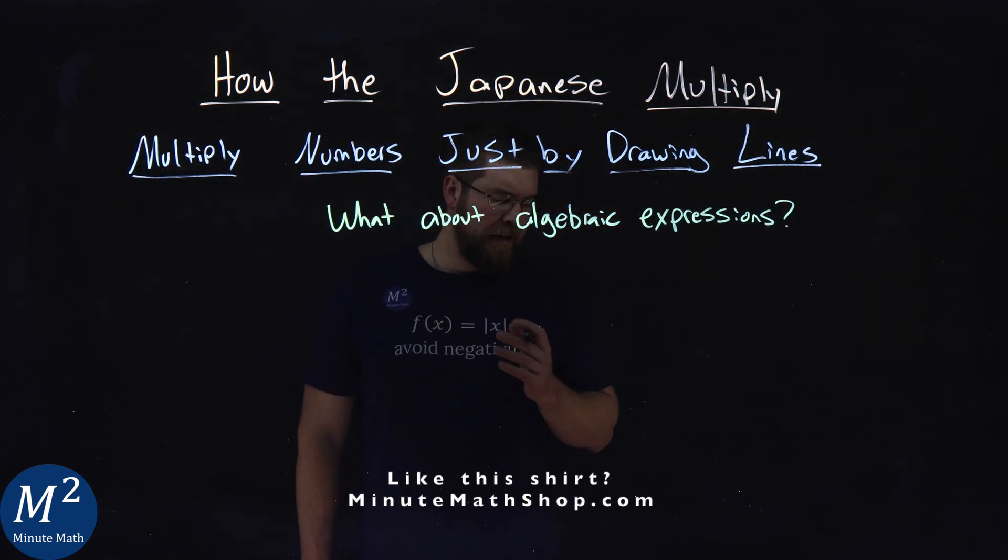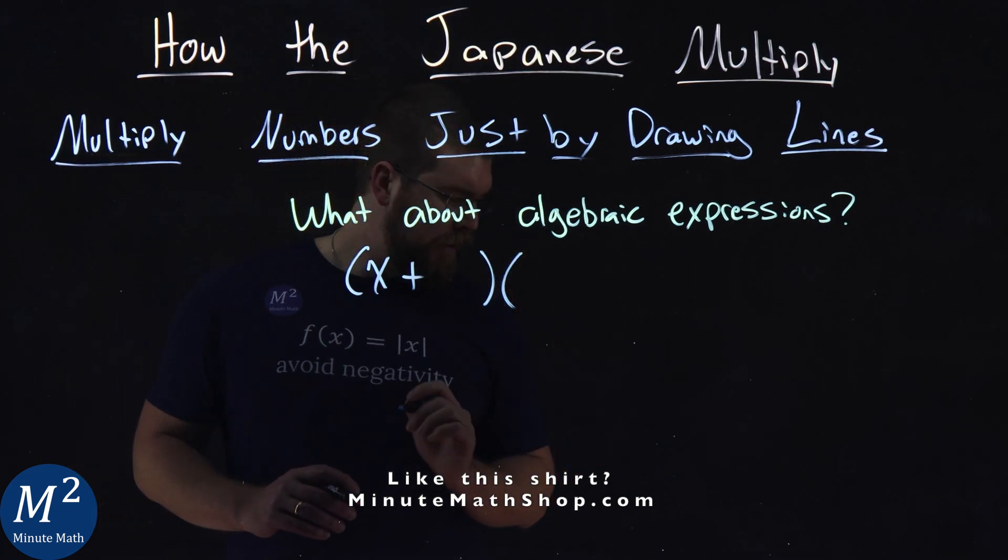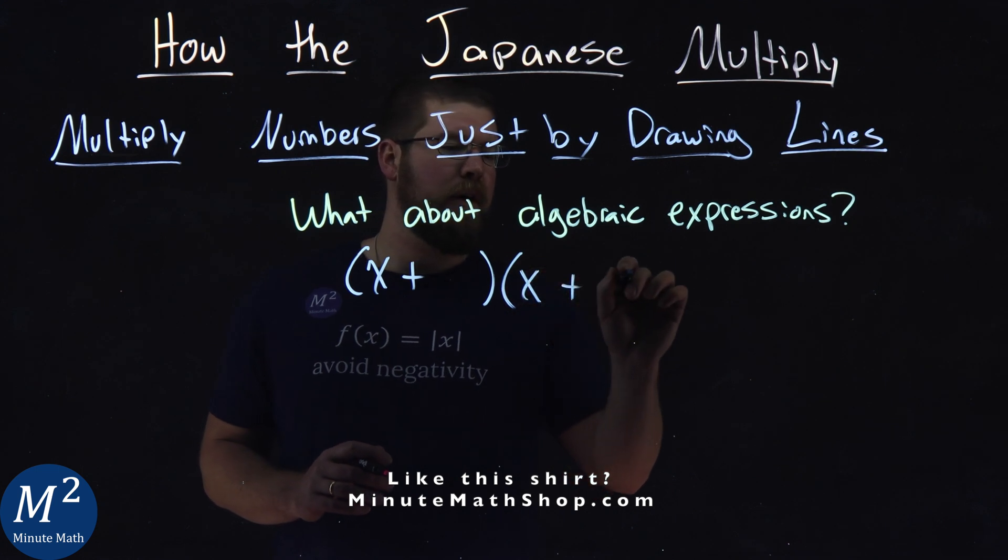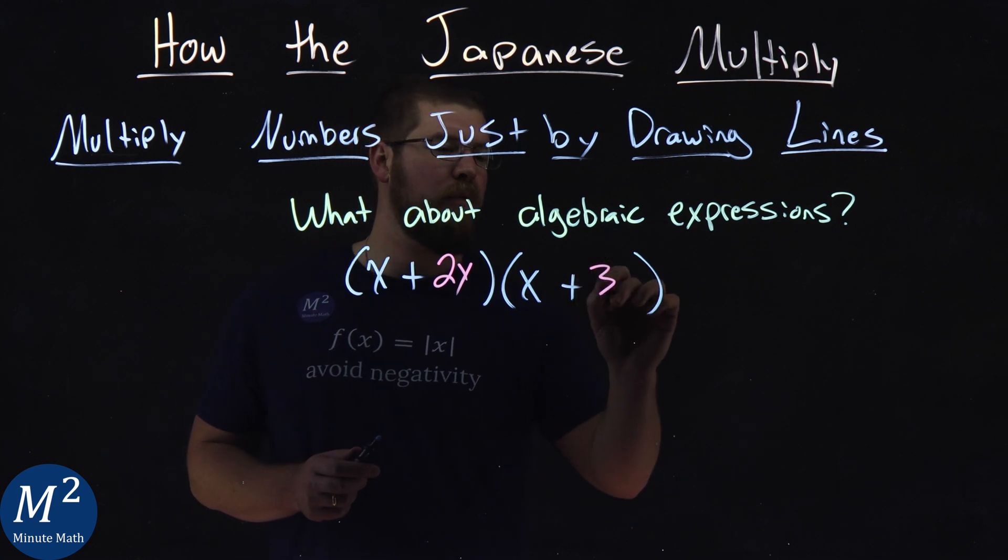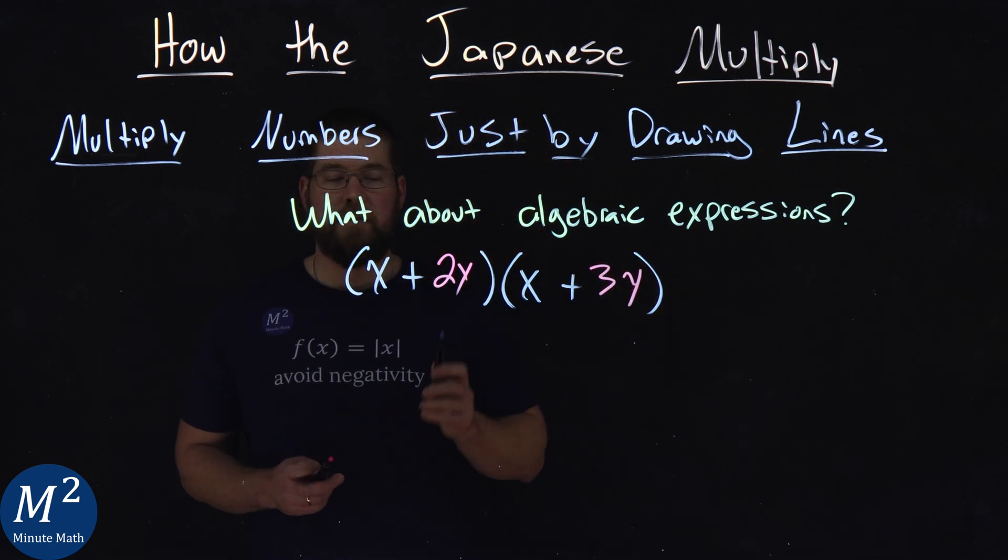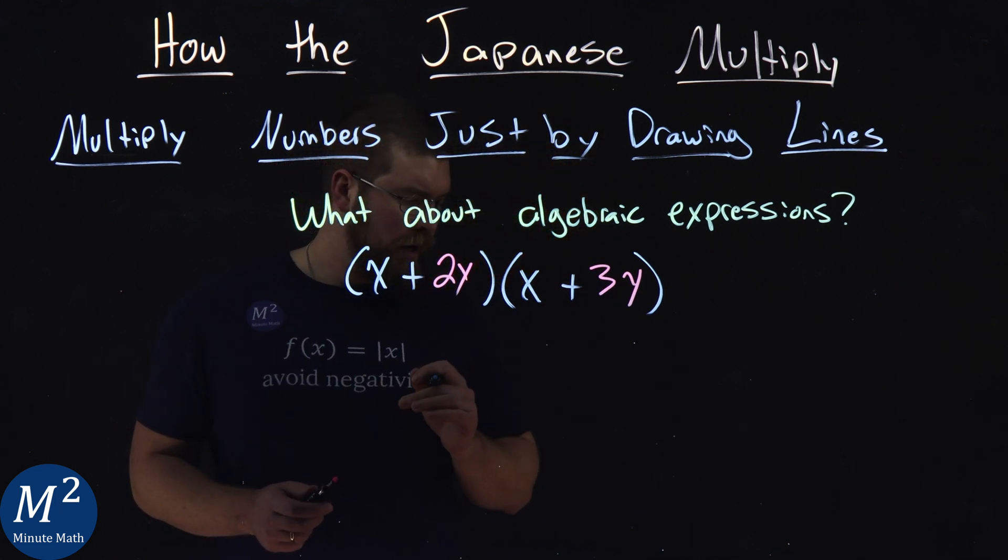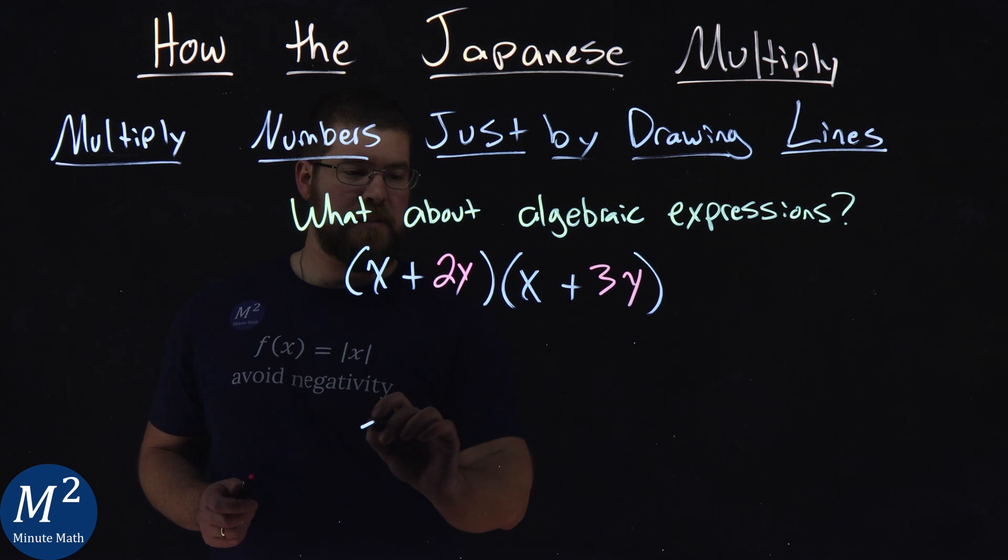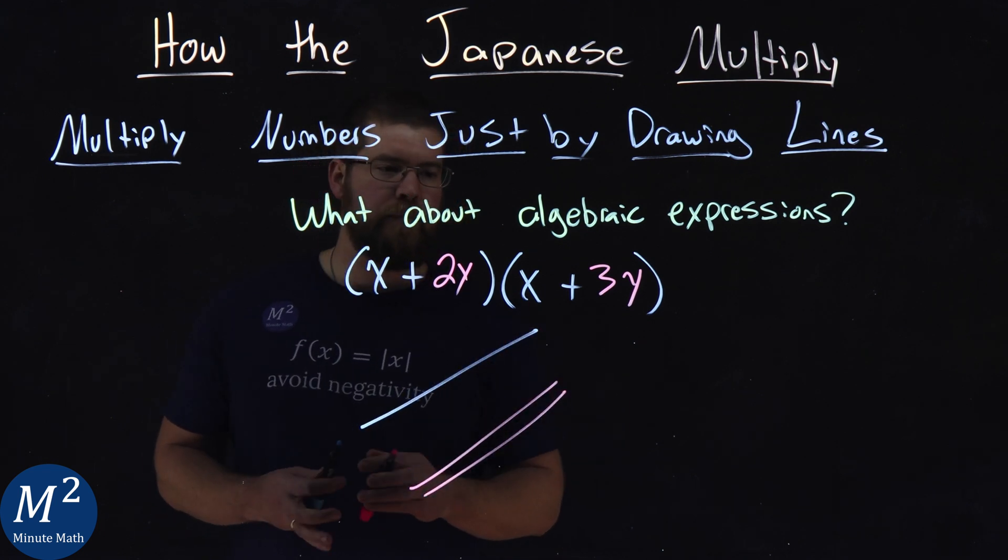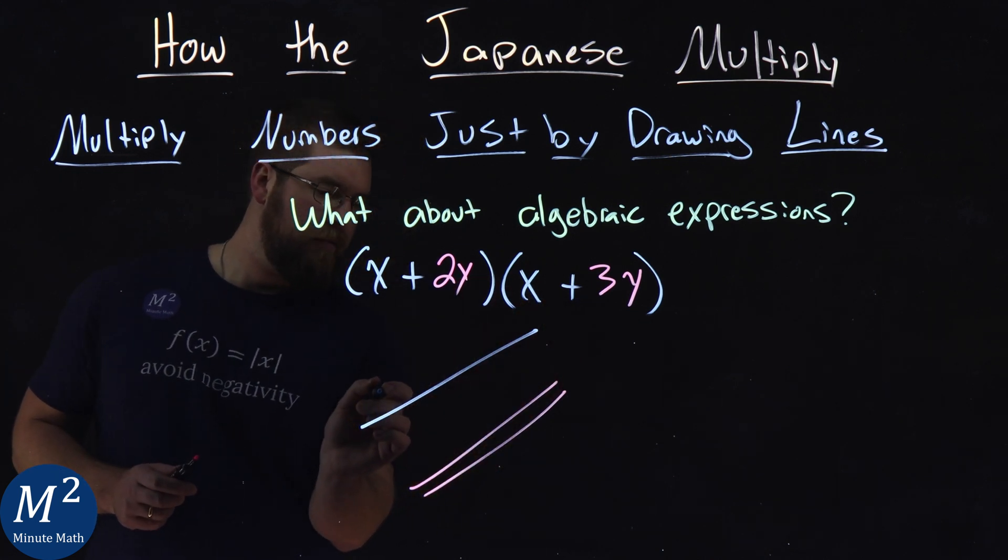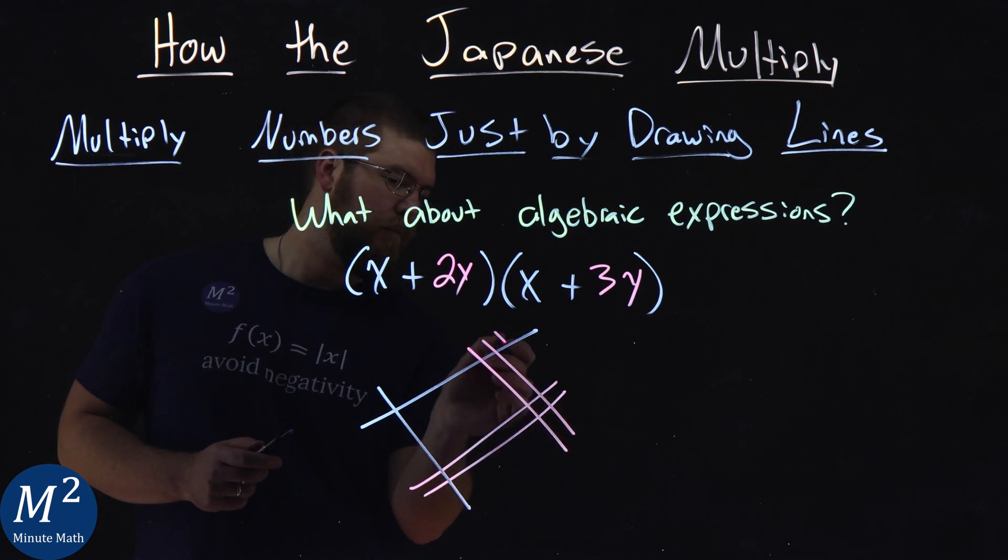Alright. So, what about algebraic expressions? Let's try this expression. X plus, I'll give it a space here. And, we're going to have that X again. And, plus, space. And, I'm going to multiply here 2Y and 3Y. So, the X's are in blue. Y's are in pink. So, the first expression. X plus 2Y. Multiply that. We have a single line for the X. And, two lines for the pink. Again, same idea for the second part. We have one line for the X. And, then, three lines for the Y. One, two, three.